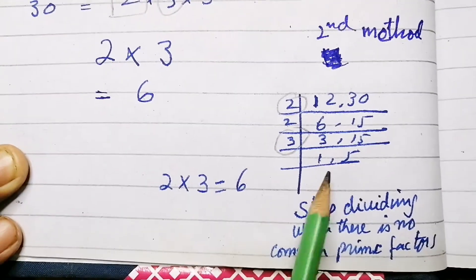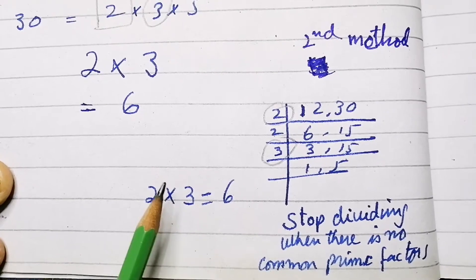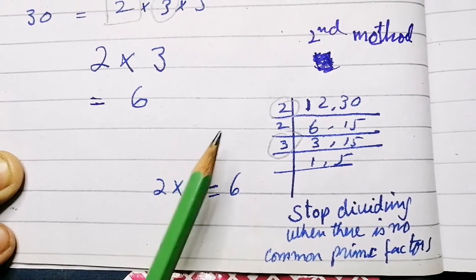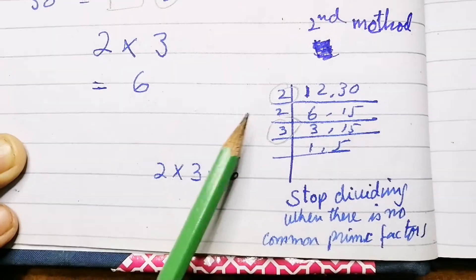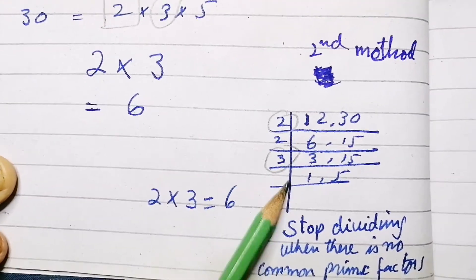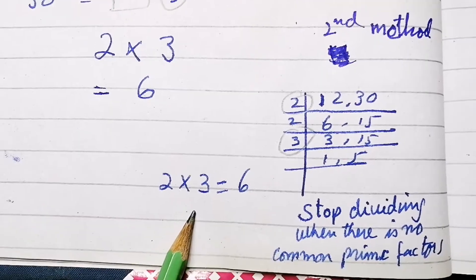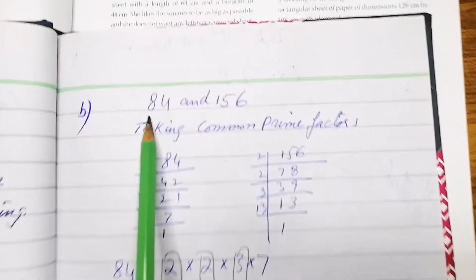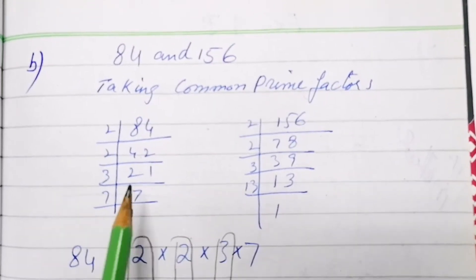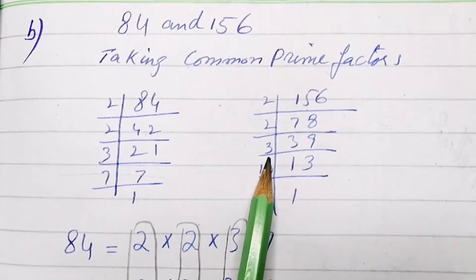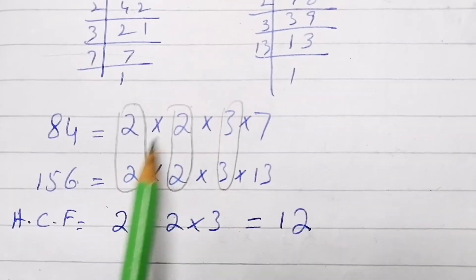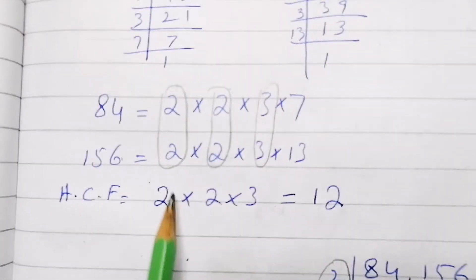You can also use the second method: taking common prime factors through the LCM division method (DVN method). Both methods give the same answer. For part B, 84 and 156 are given. Take their prime factors separately, then multiply the common factors to get the HCF.